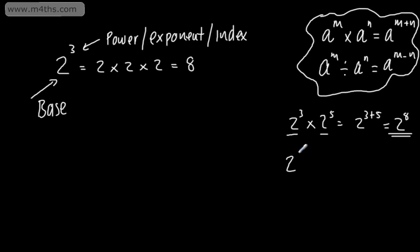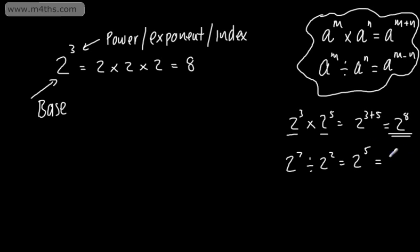If I had 2 to the power of 7 and divided it by 2 to the power of 2, we are dividing so we're going to subtract. This becomes 2 to the power of 5, as we're doing 7 minus 2, and if we evaluate that it gives us 32. So 2 to the power of 5 is 32. You don't have to show this step — I've just done it for completeness.